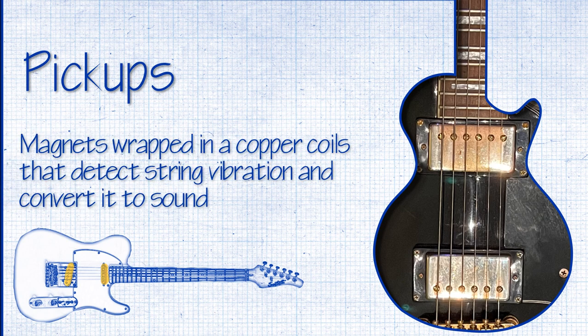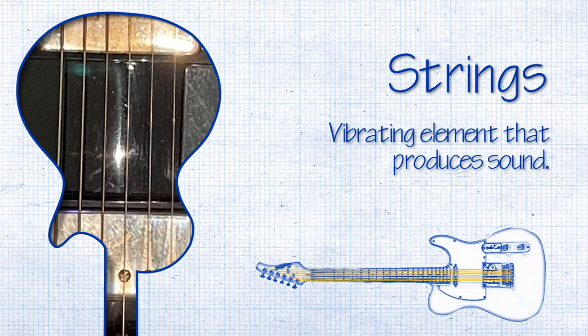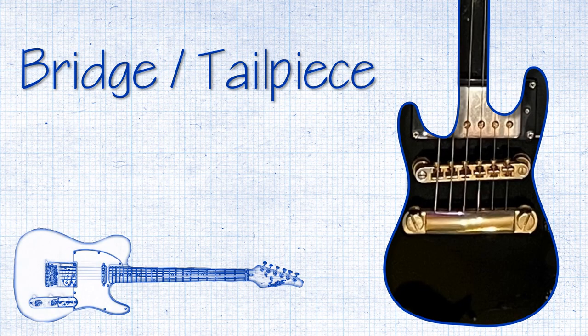Guitar pickups are magnets which are wrapped in copper coils and then mounted on a bobbin, then covered by plastic or metal. Electric guitars have six metal strings of differing gauges, which are usually comprised of nickel or copper. Standard tuning for these is E, A, D, G, B, E.